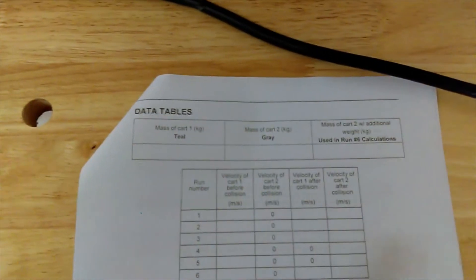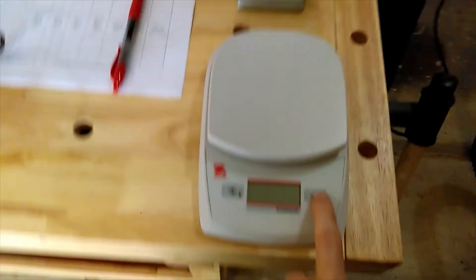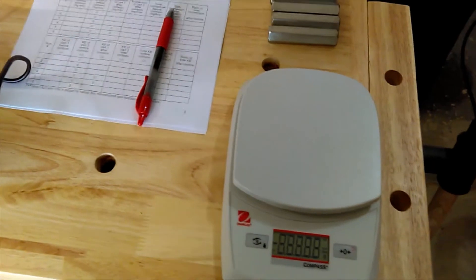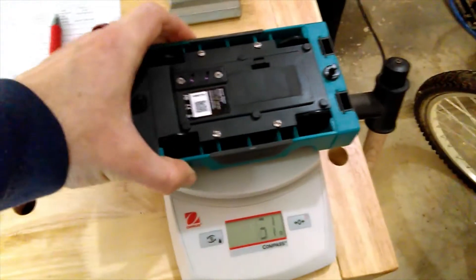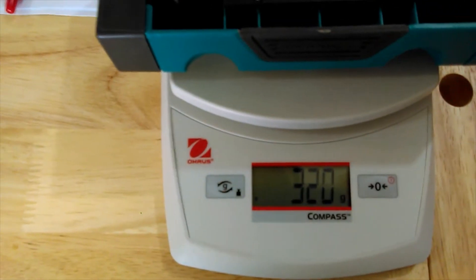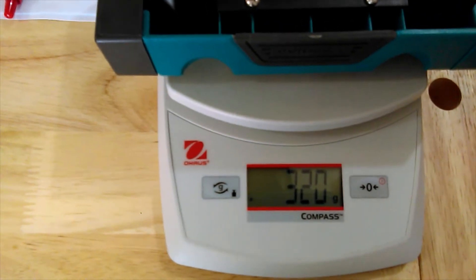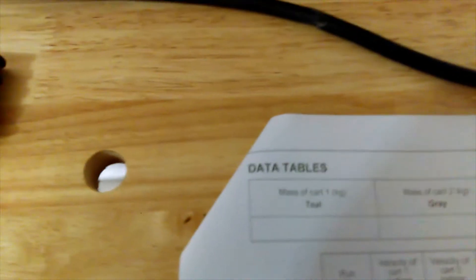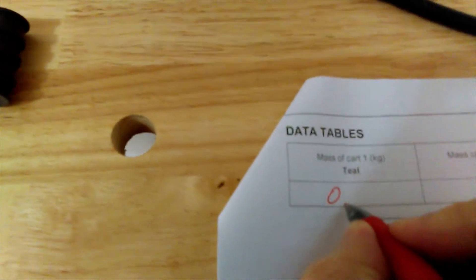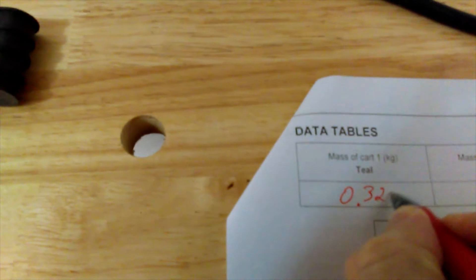One of the first things you want to do is find the mass for each car. I've got a scale here. Starting with car number one, flipping it upside down so it doesn't roll off, 320 grams. Notice on the data table we want kilograms, so converting this gives us 0.320 kilograms.